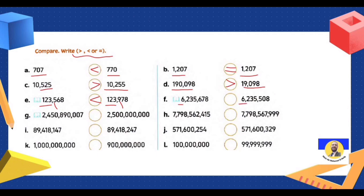Next: six at the same; 235 at the same; here 600 and there 500 — 600 is the greatest. Next: two milliard at the same; 500 and 450 — 500 is the greatest. Next: seven at the same of seven; seven seven seven; seven hundred ninety-eight at the same; 562 and 567 — 567 is greatest because seven thousand is greater than two thousand.